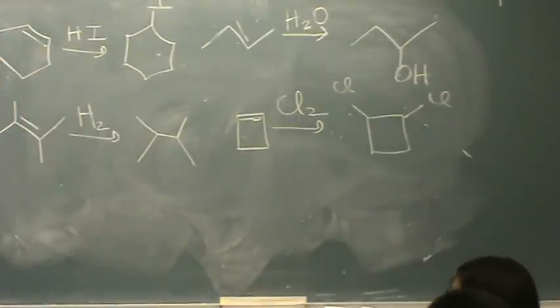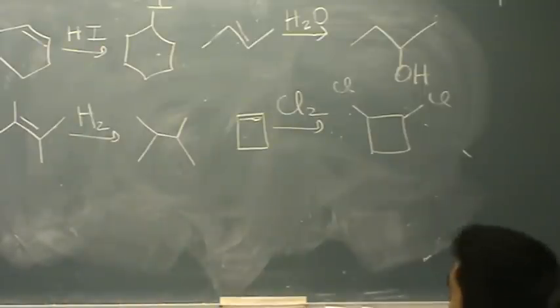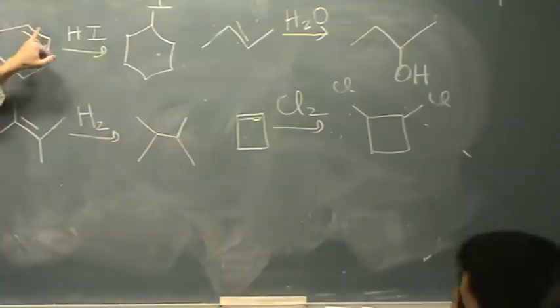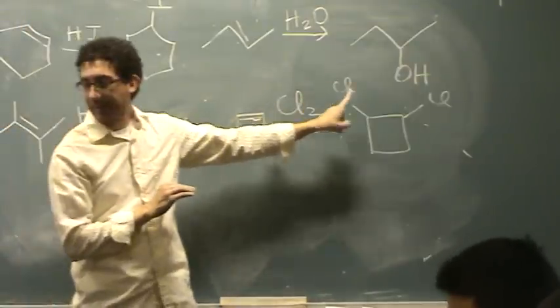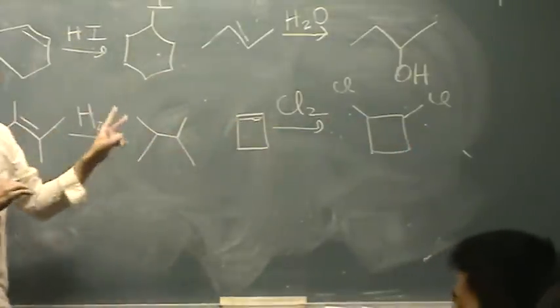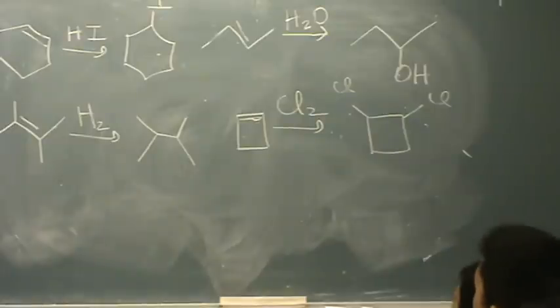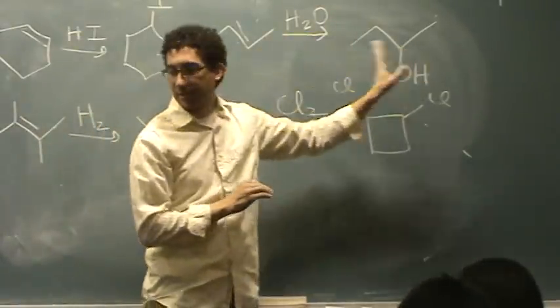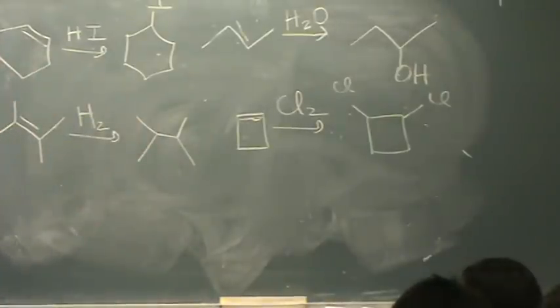So when you have a halogen, do you have to take two? Yes, and then you have one on each carbon. I'd actually say it a little bit differently. I'd say this has an H and an I, so one side gets an H, other side gets an I. This has a Cl and Cl, so one side gets a Cl, other side gets a Cl. So every reagent will have two parts: H and H, H and OH. Those two parts go symmetrically across the double bond.